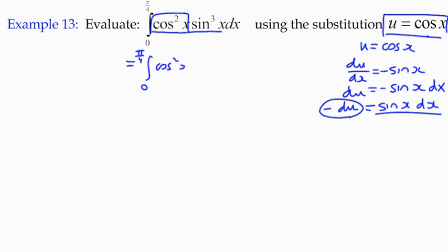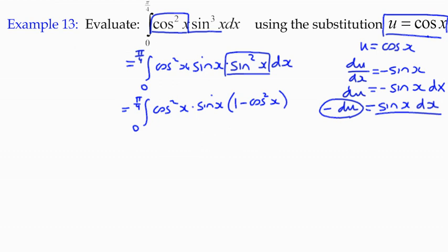So what I'm going to do is rewrite this. I've got cos squared x. That's in the bag. I'm going to write this as sin x times sin squared x with respect to x. And what I'm going to do is I'm going to use that identity 1 minus cos squared x. And I'm going to end up with cos squared x times sin x times 1 minus cos squared x dx.